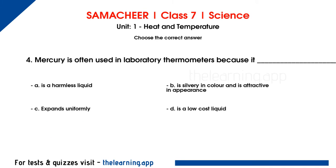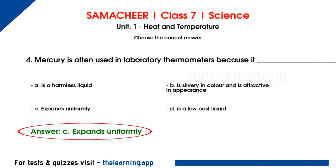Fourth question: mercury is often used in laboratory thermometers because it dash. Options are A, it is a harmless liquid; B, it is silvery in colour and attractive in appearance; C, expands uniformly; D, it is a low cost liquid. The correct answer is option C, expands uniformly. When we apply heat, the liquid expands uniformly in the thermometer, so we can predict the temperature correctly. That is why mercury is used as the liquid in a thermometer.